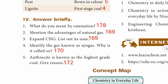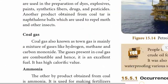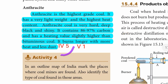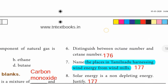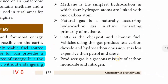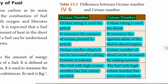Fifth question: Anthracite is known as the highest grade coal — give reason. Page 172. Anthracite produces high heat and less dust. Refer to the full paragraph on anthracite. Then question 6: Distinguish between octane number and cetane number — page 176. Present it in a tabular column with four points.